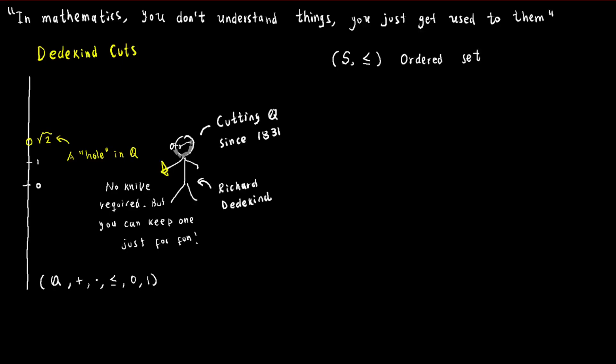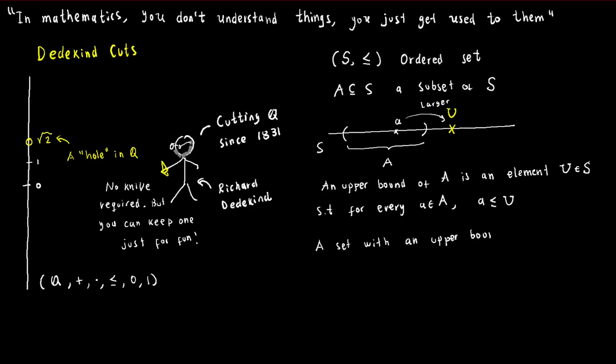We start with an ordered set S, where the order is smaller or equal, and look at subsets of S. If a subset A of S has an upper bound U, such that U is greater than or equal to every element in A, then we say that A is upper bounded. We can define lower bounds and lower bounded sets in a similar way.